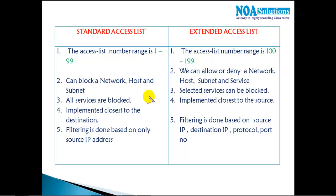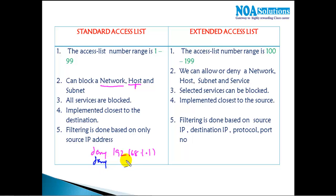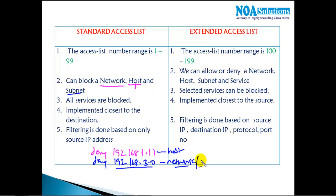In a standard ACL, you can allow or deny a specific host — for example, deny 192.168.1.1 to deny a single host — or you can deny or permit a complete network, like 192.168.3.0. So a standard ACL can filter a specific host, a specific network, or a subnet — a subnetwork resulting from subnetting.